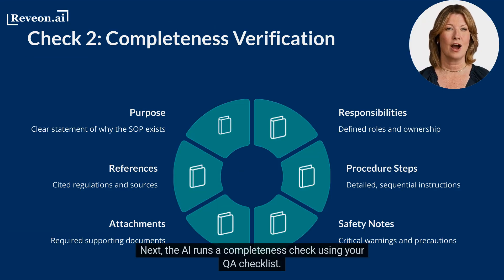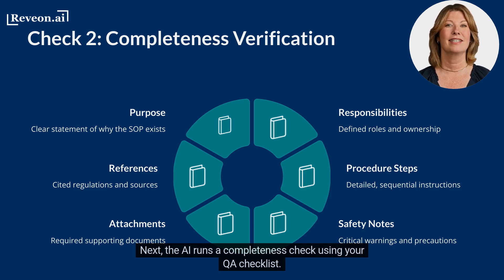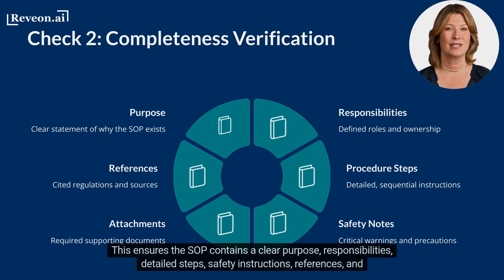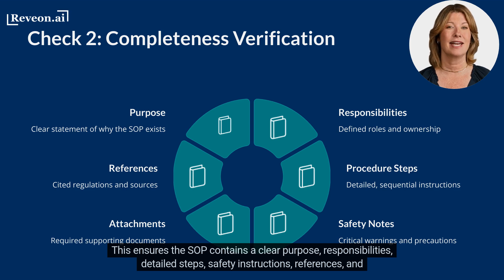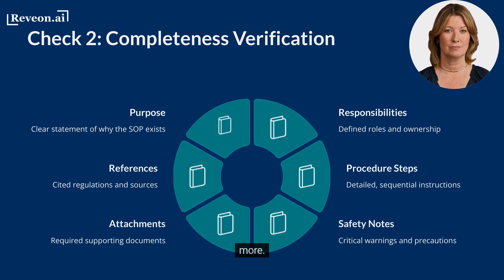Next, the AI runs a completeness check using your QA checklist. This ensures the SOP contains a clear purpose, responsibilities, detailed steps, safety instructions, references, and more.